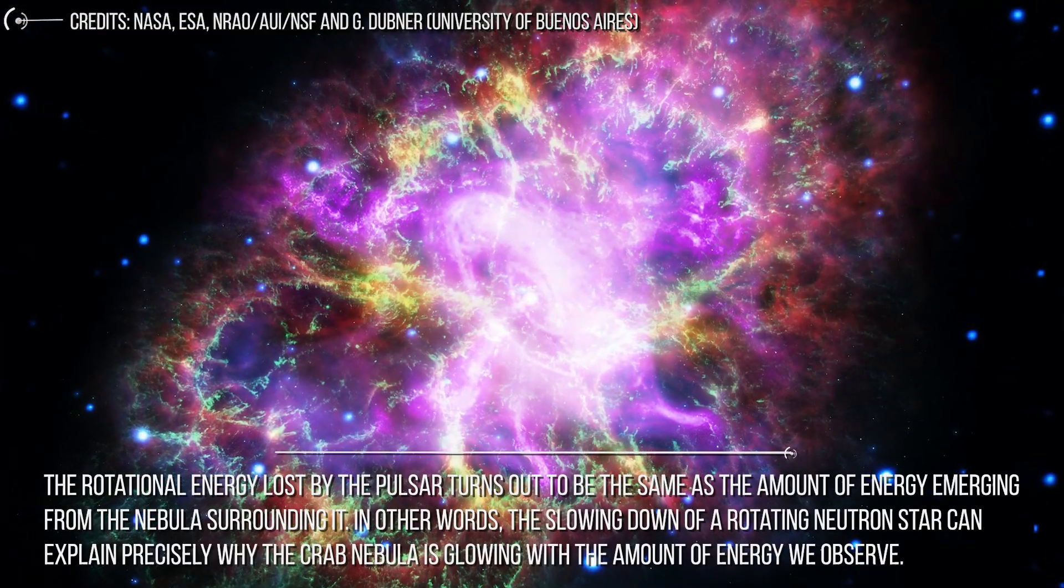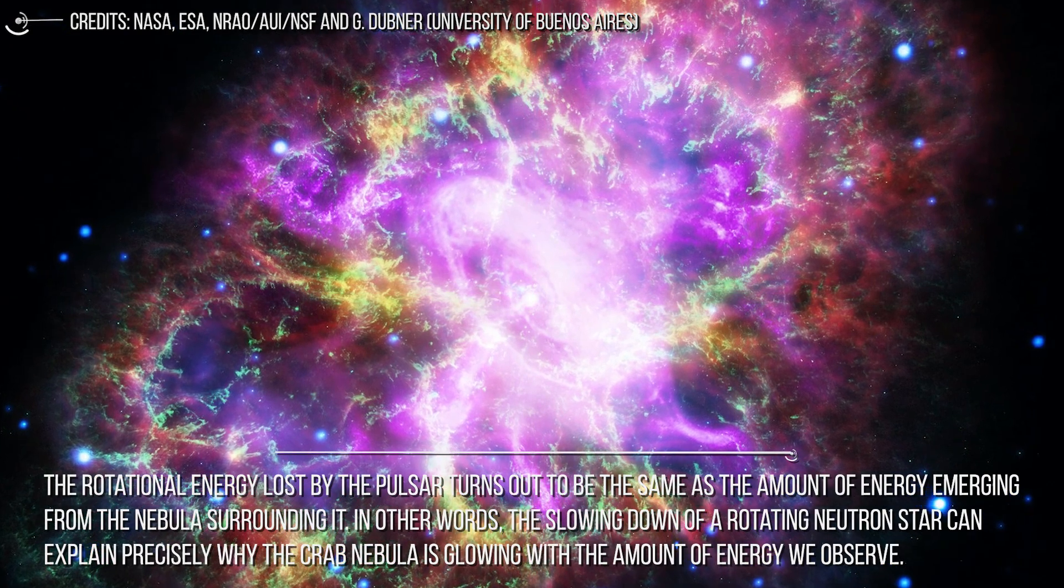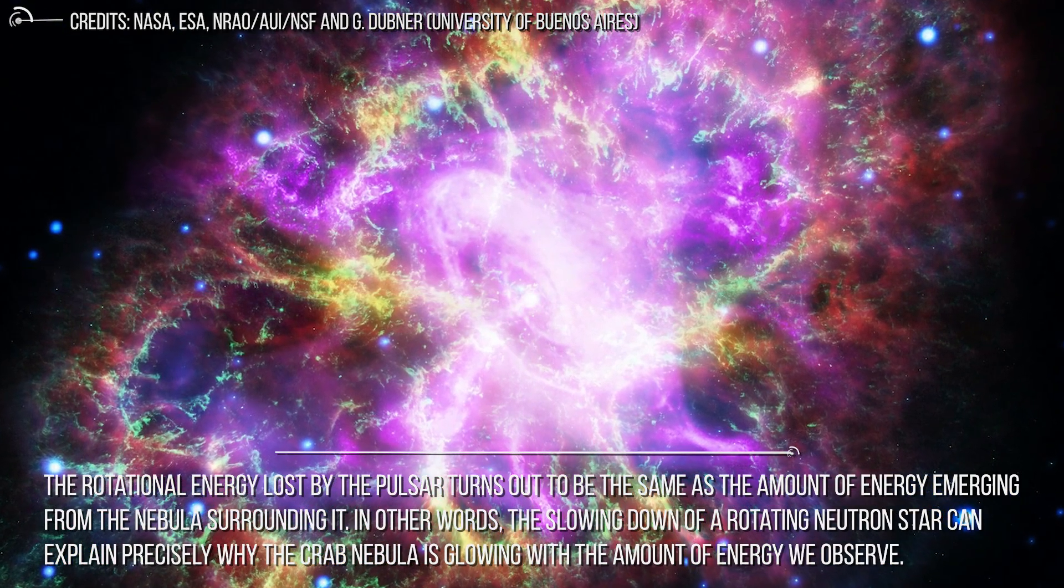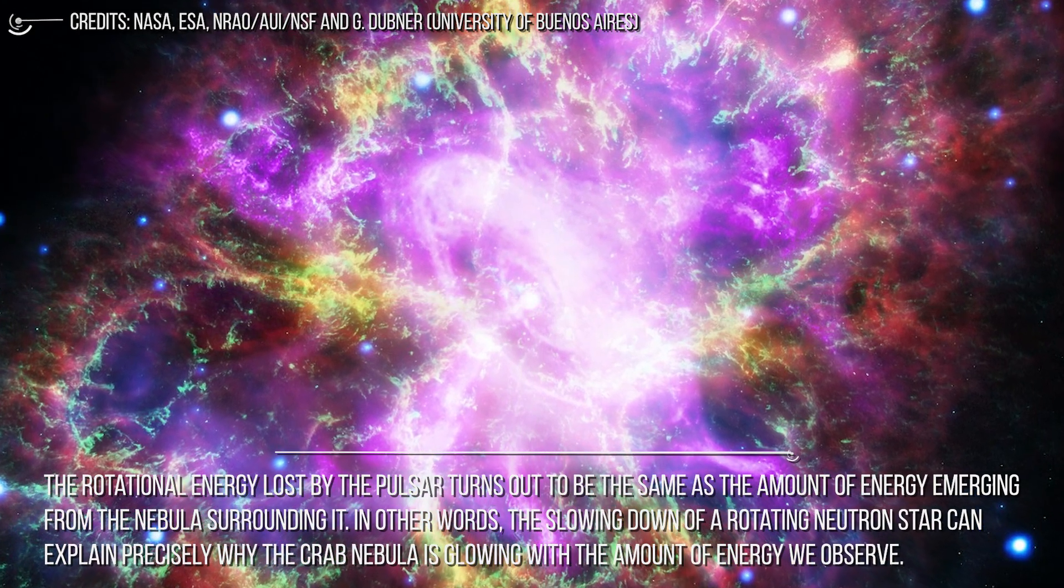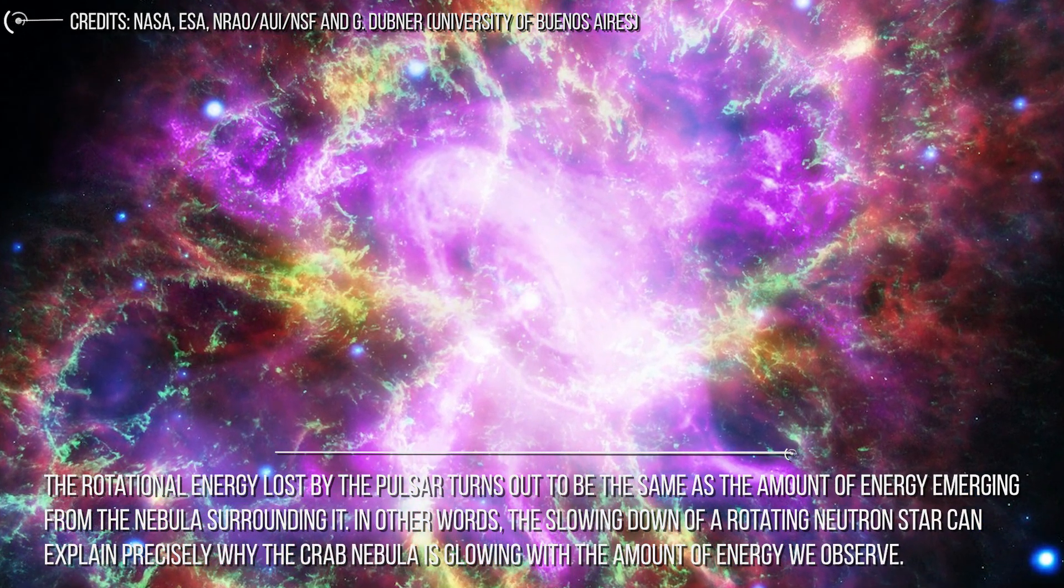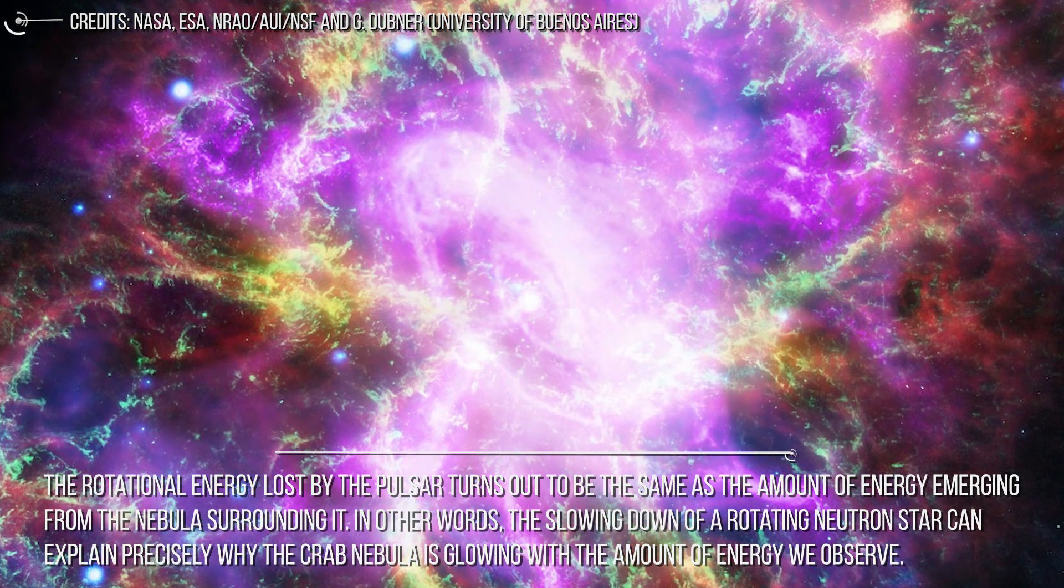To the satisfaction of astronomers, the rotational energy lost by the pulsar turns out to be the same as the amount of energy emerging from the nebula surrounding it. In other words, the slowing down of a rotating neutron star can explain precisely why the Crab Nebula is glowing with the amount of energy we observe.